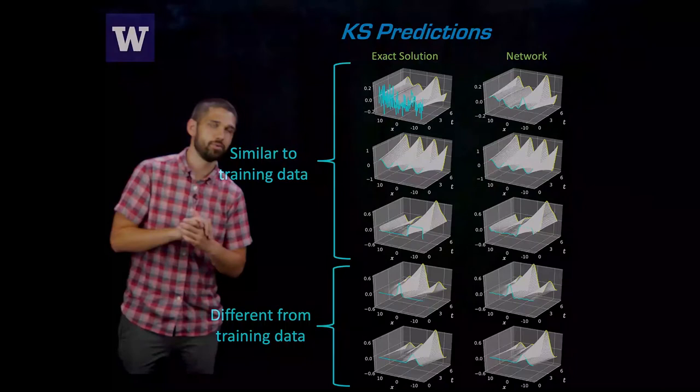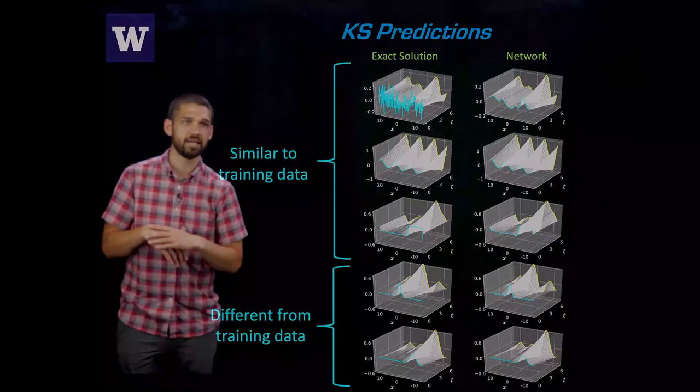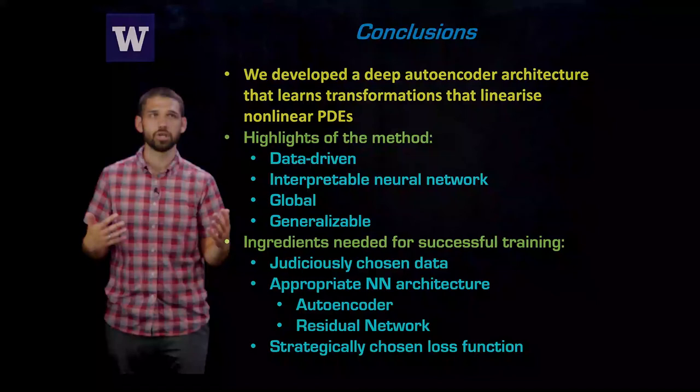And the results, again, are very good. This is actually some results where we did some reduced order modeling. So we did some dimensionality reduction in the middle. And you can see, comparing qualitatively the network outputs with the exact solution, we do reproduce the dynamics of the KS equation.